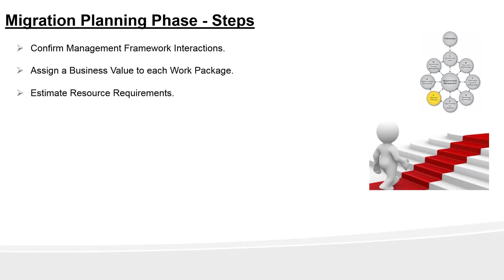Next is to estimate resource requirements. This step is all about understanding the costing of the project, planning, and resource allocation to implement the work packages. Based on the business value and resource requirements, you will be able to prioritize the work packages, so that those with high business value and less resource utilization in terms of cost and time will be prioritized. This way you can get some quick wins and start showing the value of your architecture work, which is very important to the success of the architecture project.